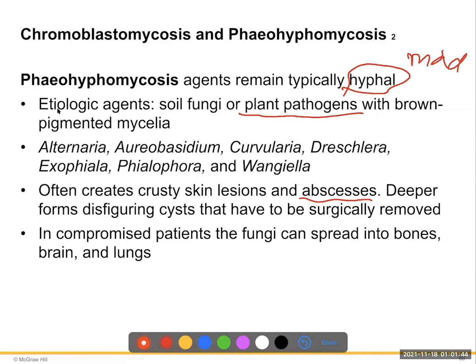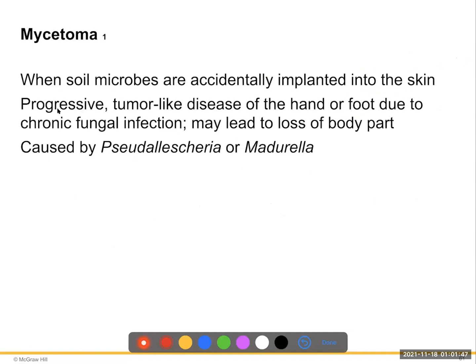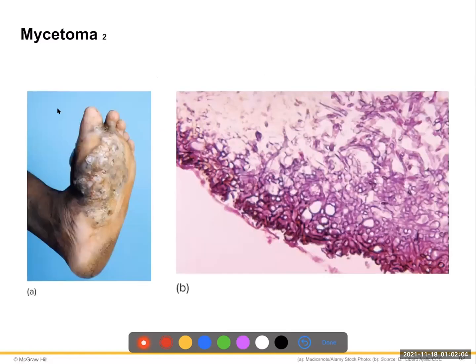Mycetoma occurs when soil microbes are accidentally implanted into the skin — a progressive tumor disease of the hand and foot due to chronic fungal infection that may lead to loss of the body part. It is caused by Pseudallescheria or Madurella. Infection of the foot can invade the epidermal layer and cause significant tissue destruction.